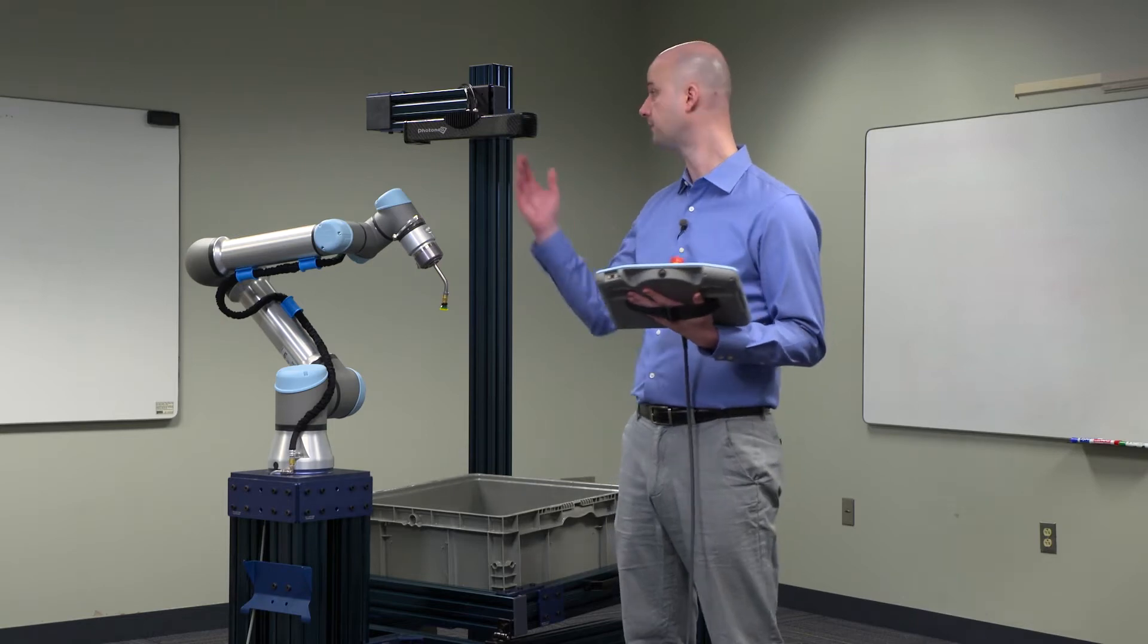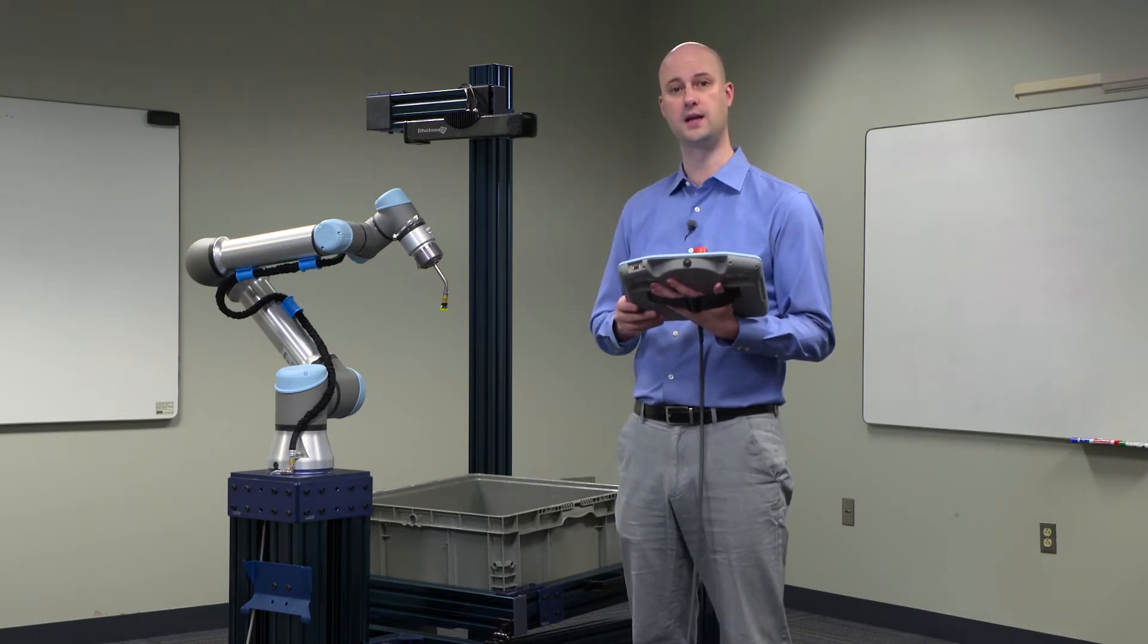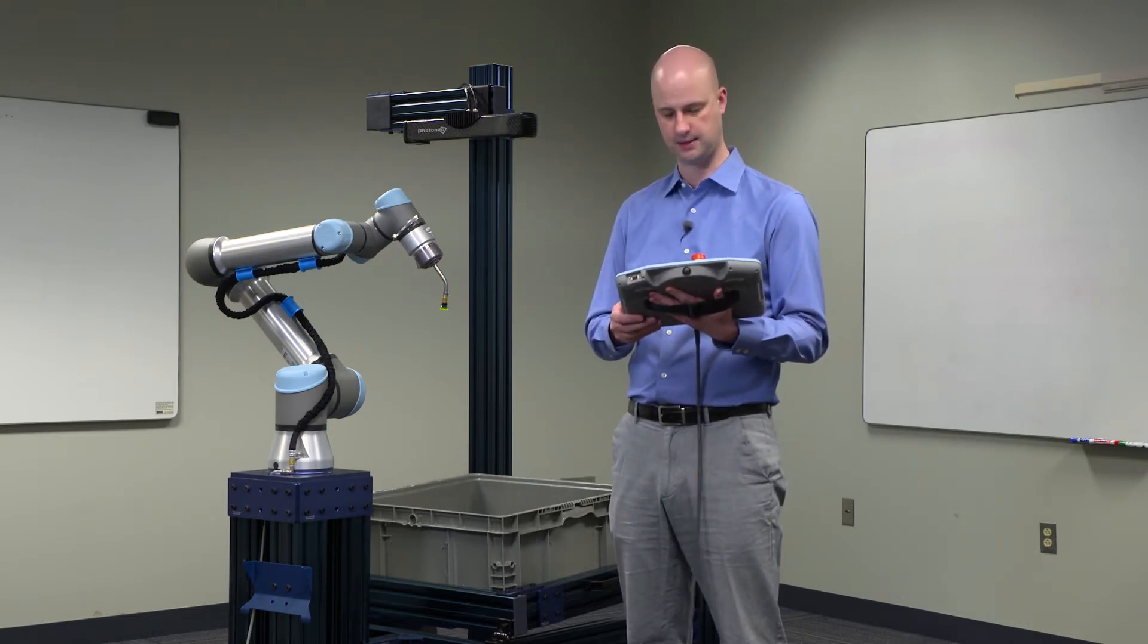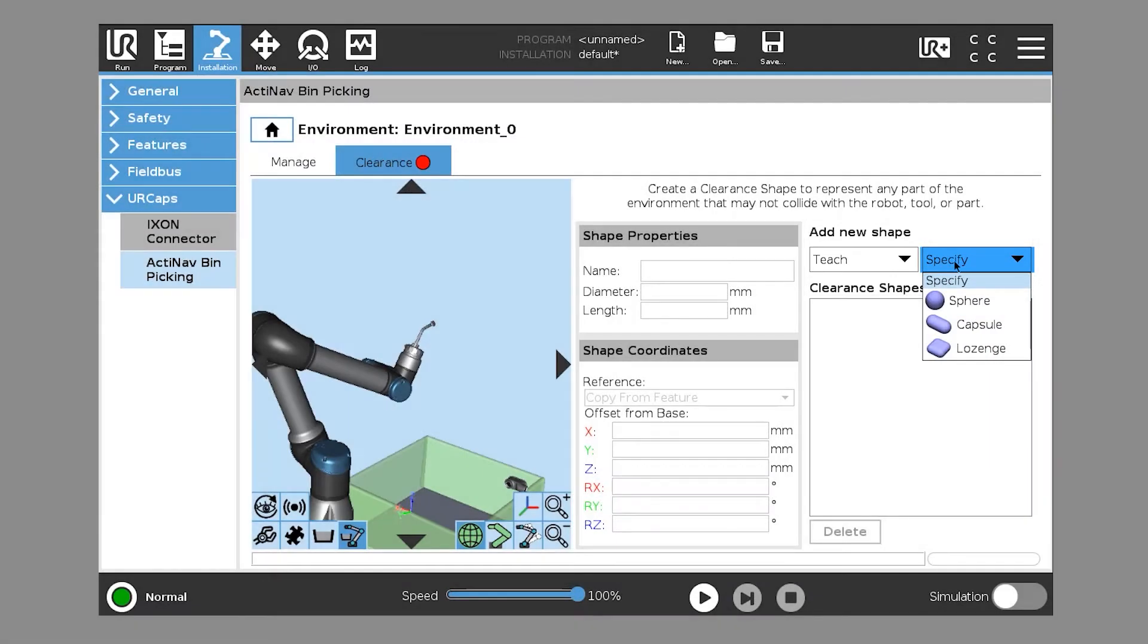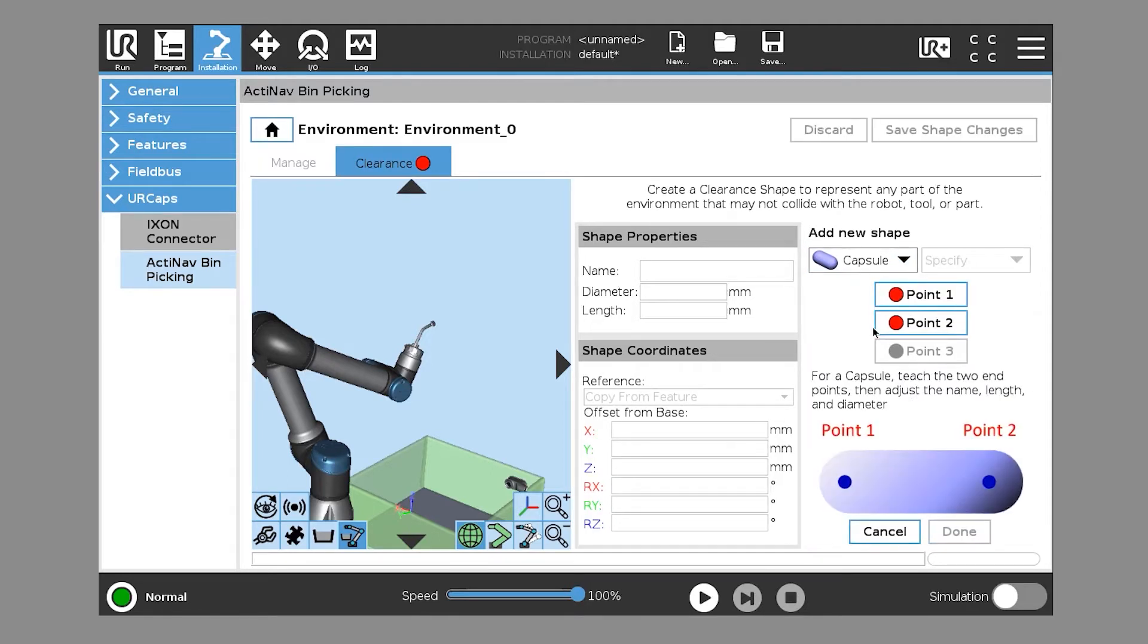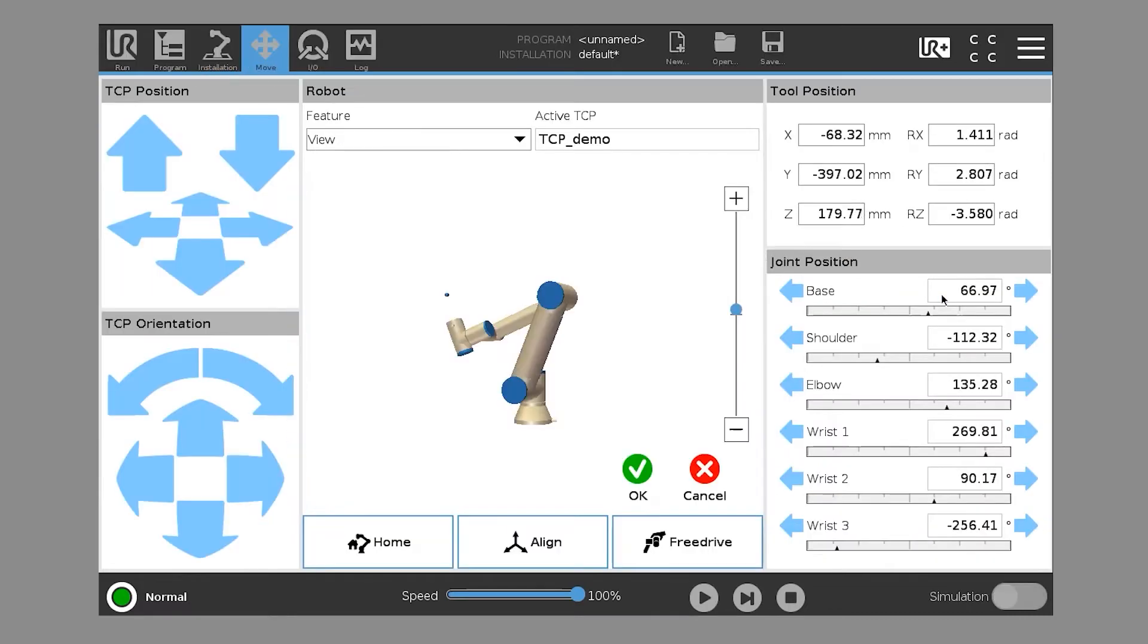We want to touch and create these clearance shapes for everything that the robot can touch. Usually we start with the sensor. Let's start by creating a nice safe clearance shape around the sensor. You see that there's two methods for creating clearance shapes. We can specify or we can teach. Let's start with teach. First we'll create a capsule around the sensor, and it asks us for two points and a diameter. We'll click point one.